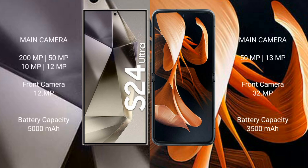Samsung Galaxy S24 Ultra rear quad camera setup: 200MP, 55MP, 15MP, 10MP, 12MP, front camera 12MP. Motorola Razr rear dual camera setup: 59MP plus 13MP, front camera 32MP.